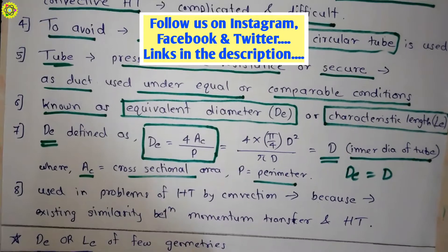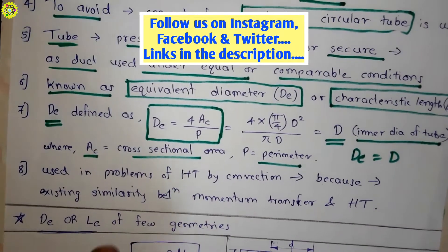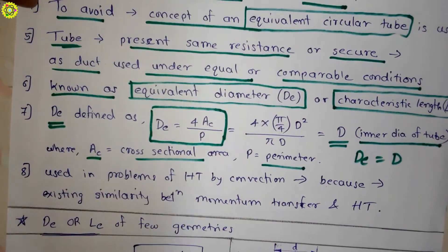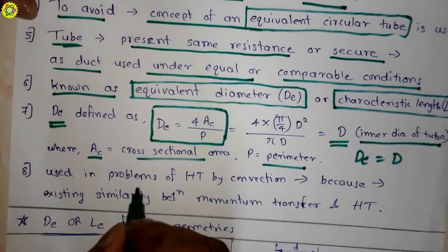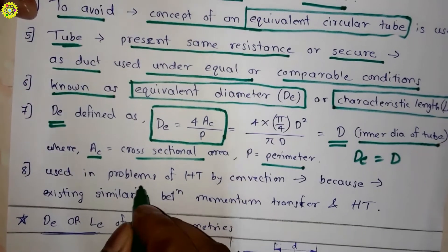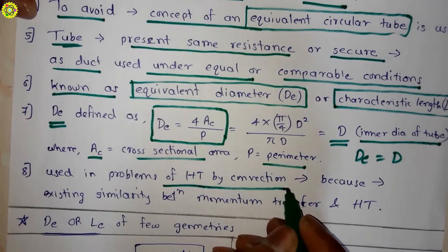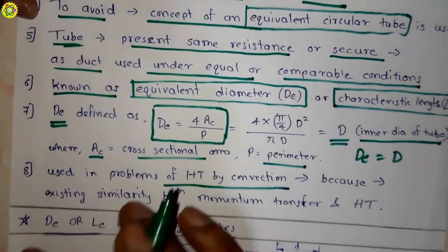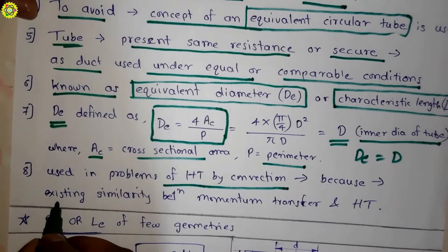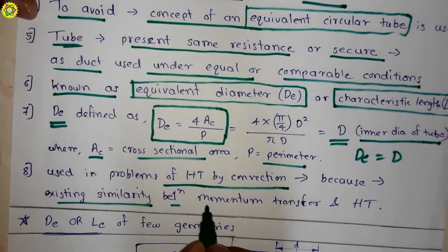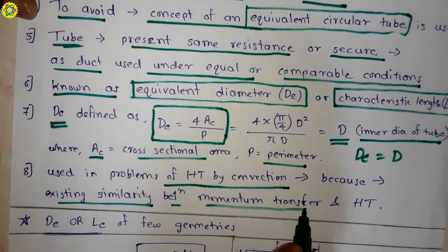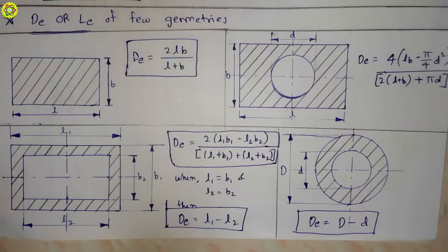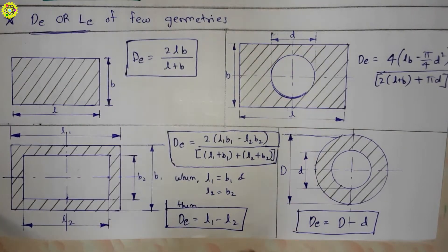This same formula we use in problems of heat transfer by convection. This is because of the existing similarity between momentum transfer and heat transfer. Now we will see some formulas of equivalent diameter or characteristic length for few geometries.